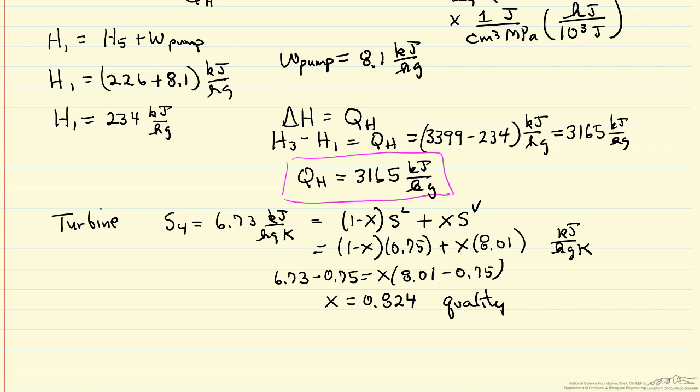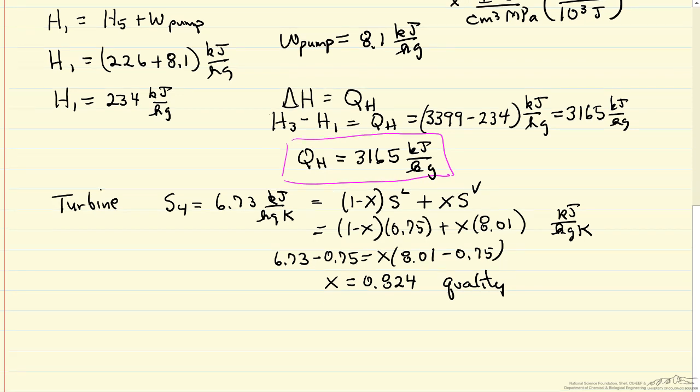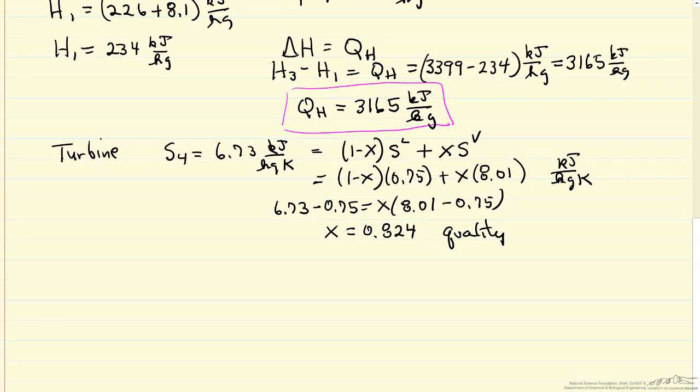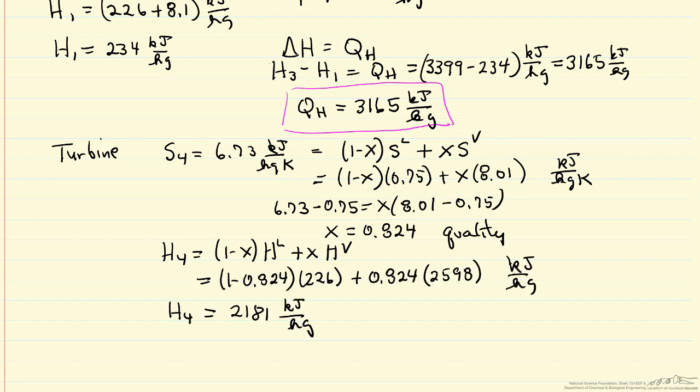Once I have that, I can calculate the enthalpy leaving the turbine by the same process. Enthalpy 4 is going to be one minus x times enthalpy of the liquid plus x times enthalpy of the vapor. Again, using the steam tables, saturation conditions at 15 kilopascals, to get enthalpies of the liquid and vapor. H4 is 2181 kilojoules per kilogram.